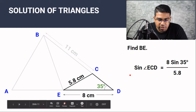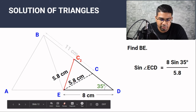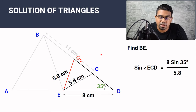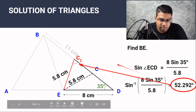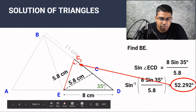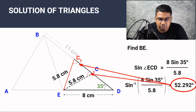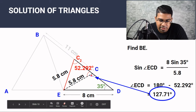We have to check whether there is an ambiguous case. The side of length 5.8 could appear in two positions, making two possible triangles. When we compute arc sine of that value, we get 52.292 degrees. This is the acute angle. Since the two possible triangles form an isosceles arrangement, the other base angle is also 52.292 degrees. We can then get angle ECD by using 180 degrees minus 52.292, which gives us 127.71 degrees. So angle ECD is 127.71 degrees.